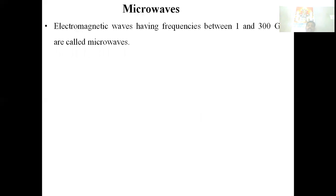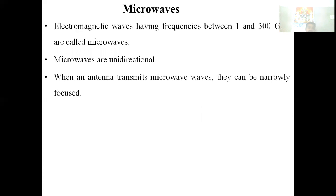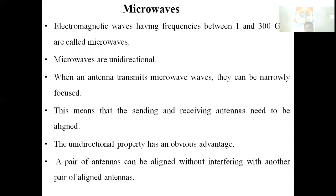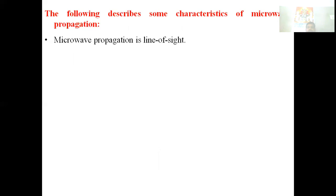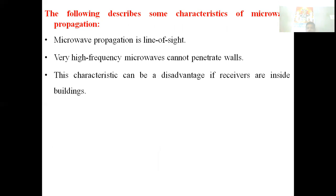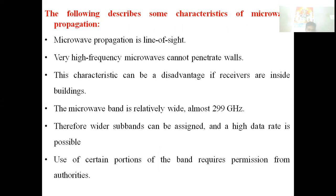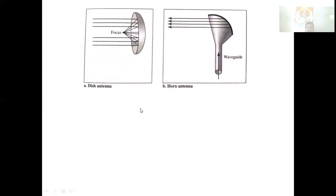Microwaves range from 1 to 300 GHz and are unidirectional — when transmitted, they can be narrowly focused, so sending and receiving antennas must be aligned. This unidirectional property means a pair of antennas can be aligned without interfering with another aligned pair. Microwave propagation is line-of-sight and very high frequency microwaves cannot penetrate through walls. The microwave band is relatively wide at 299 GHz, allowing high data rates, but permission from authorities is required to use microwaves. Antennas used include dish antenna and horn antenna.